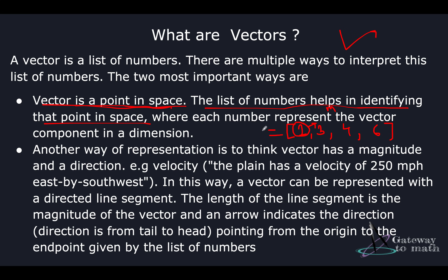For instance, take the list 2, 3, 4, 6. I can identify this vector in some dimensional space with these numbers. I have the magnitude and also the direction because of this list. So this is X, Y, Z, P — a four-dimensional space — and the magnitudes are given by 2, 3, 4, and 6. I'm able to represent vector A using this list representation, which is very common in machine learning and AI techniques.